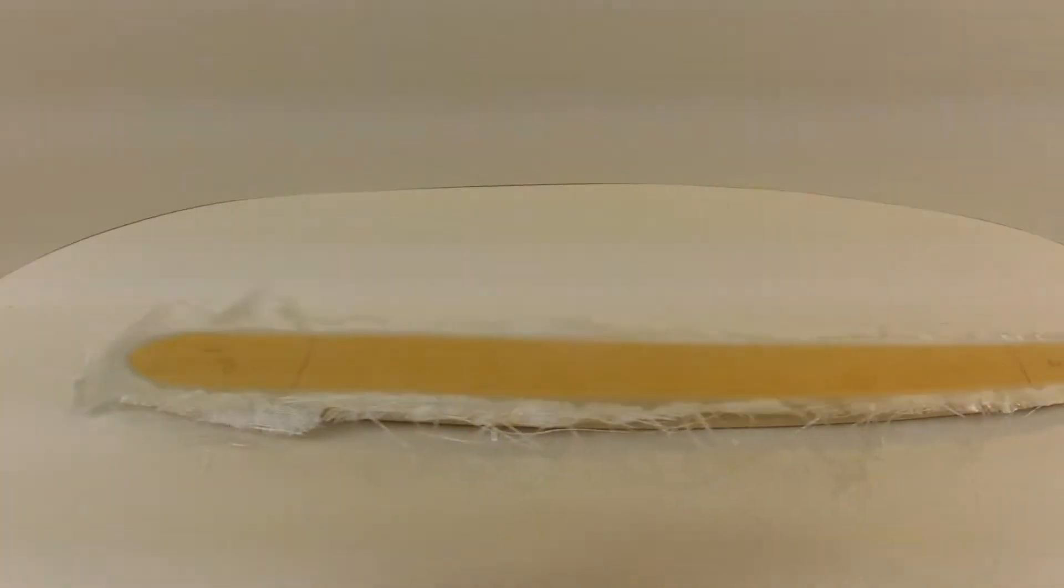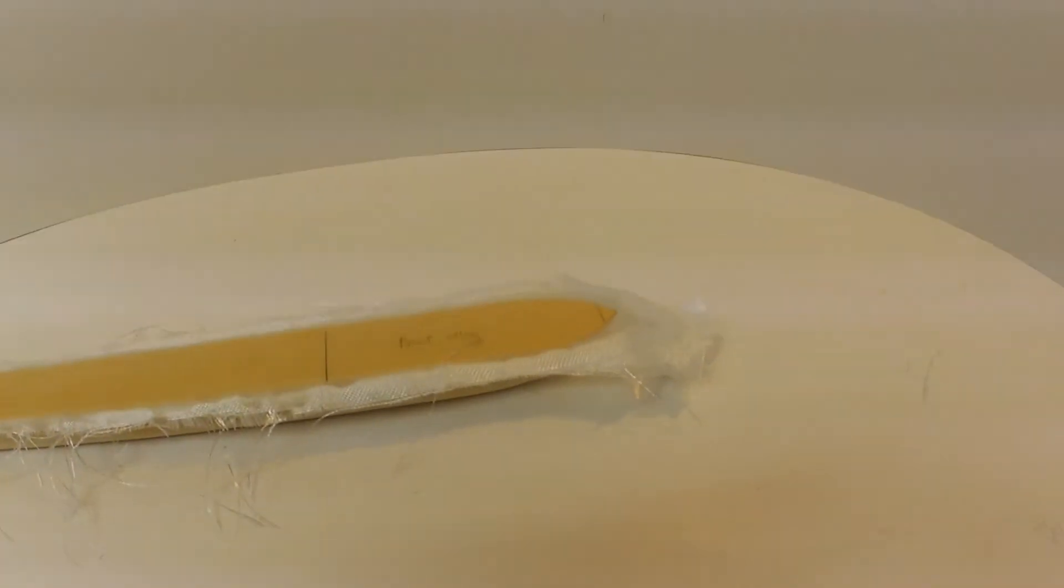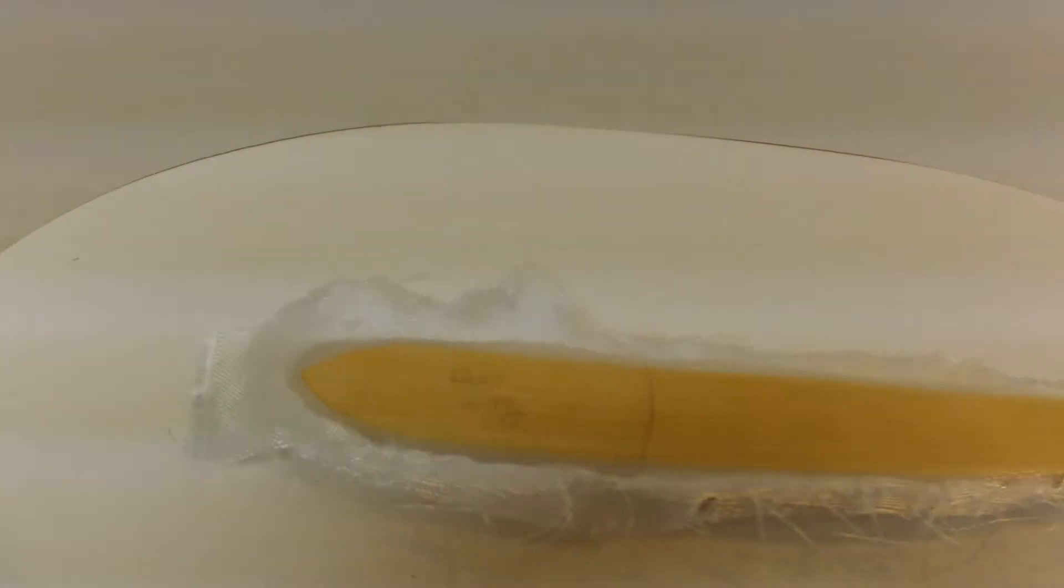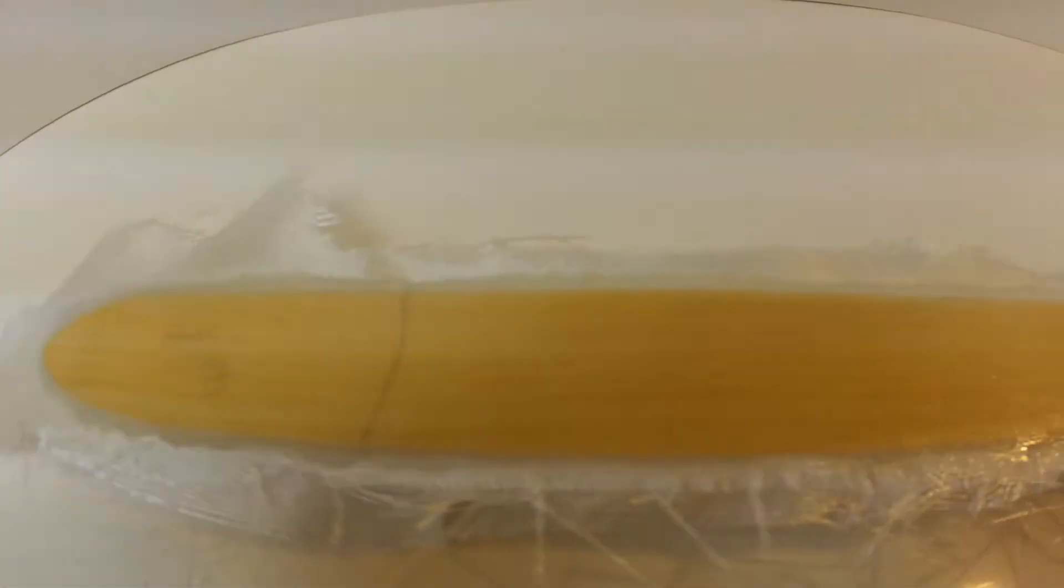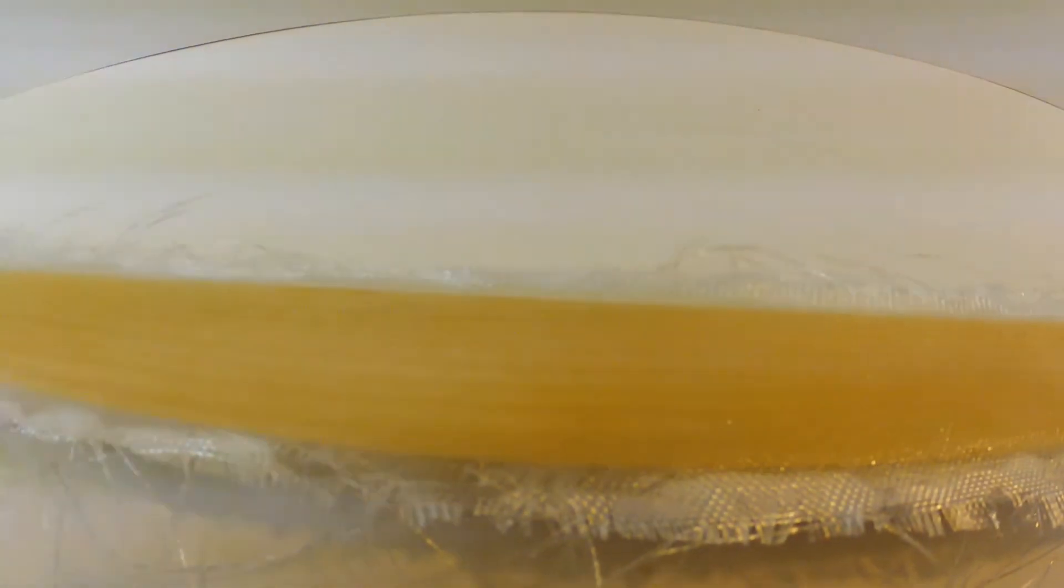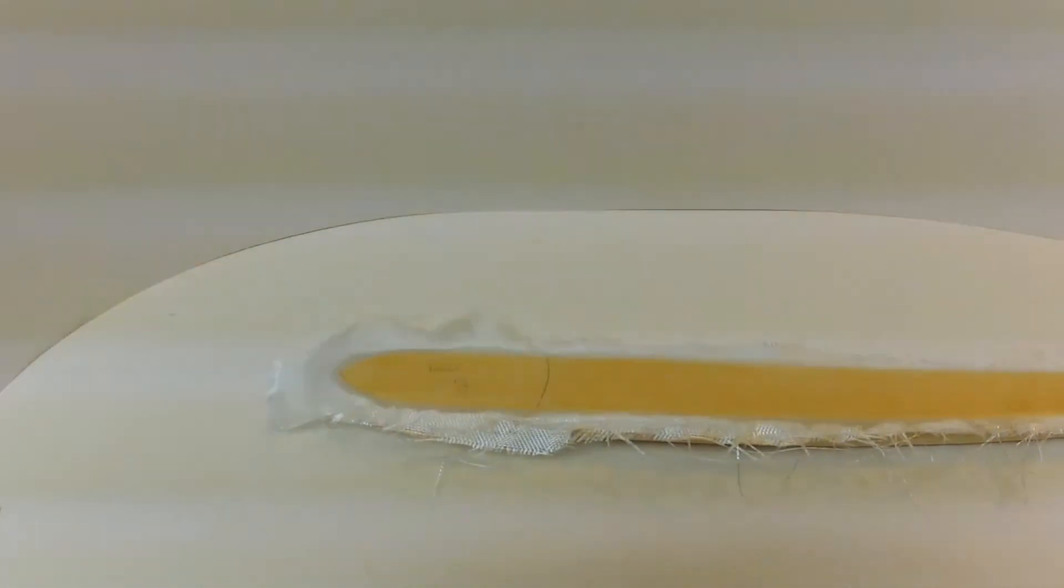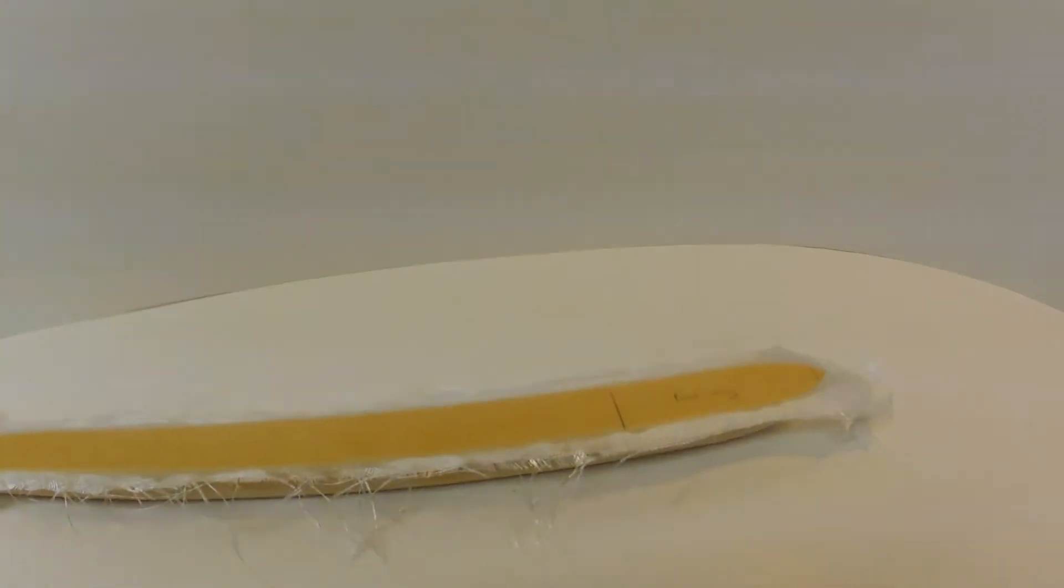Okay, so as ugly as that looks, we have all the layers down, and that is exactly what we need. There is epoxy going all the way around all the edges. Just as the wings, let it cure and we are going to come back to it.